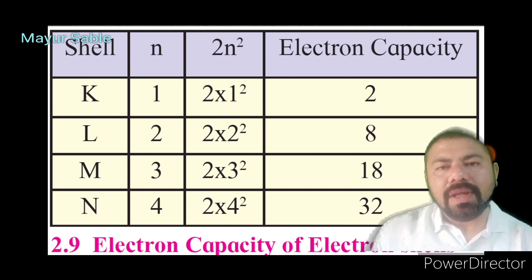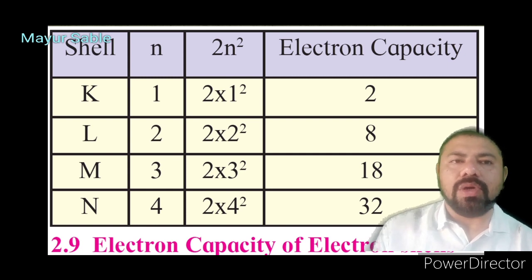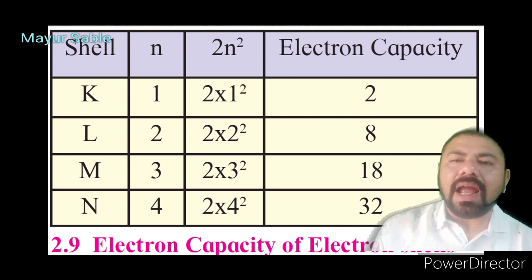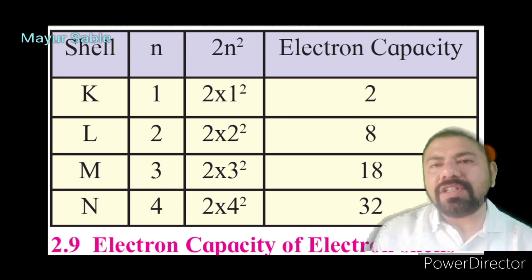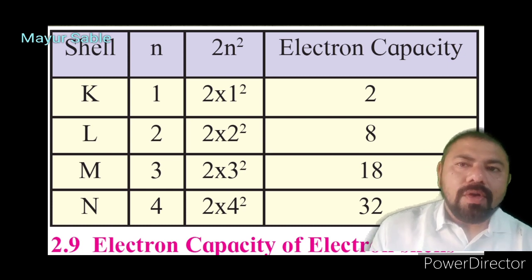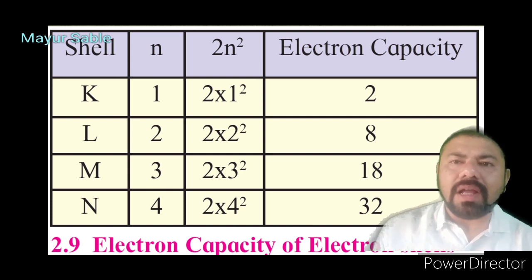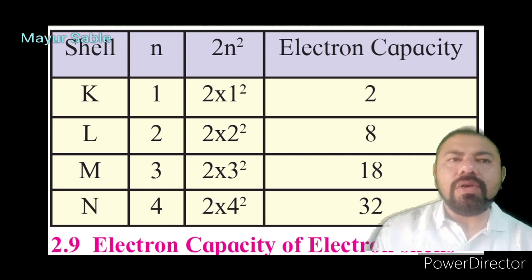For the N shell (n=4), capacity = 2×4² = 32 electrons. So in any atom: the first shell accommodates 2 electrons, second shell 8, third shell 18, and fourth shell 32 electrons. Remember, when distributing electrons, the first shell is completely filled before the second shell is filled.